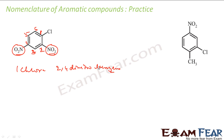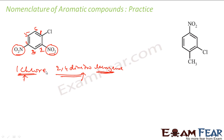Benzene is the main functional group. Chloro is my prefix, and 2,4-dinitro is also my prefix. Since chloro starts with C and nitro starts with N, alphabetically I give higher priority to chloro. So the final name is 1-chloro-2,4-dinitrobenzene.